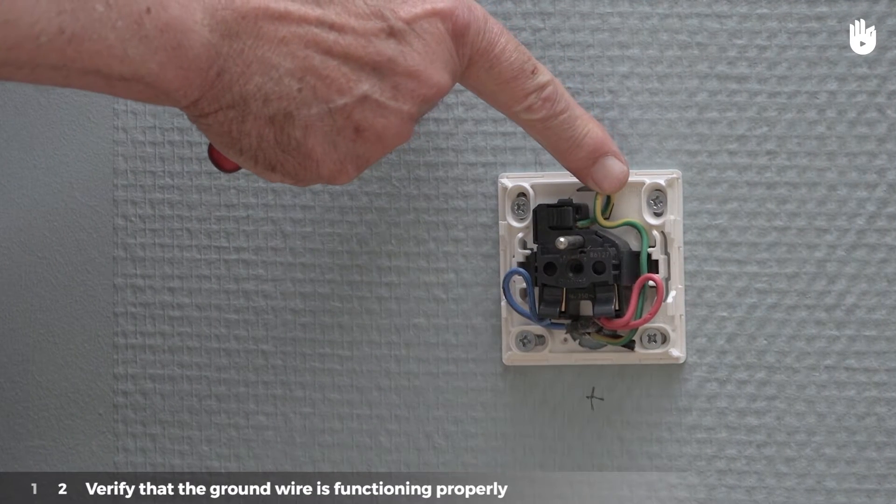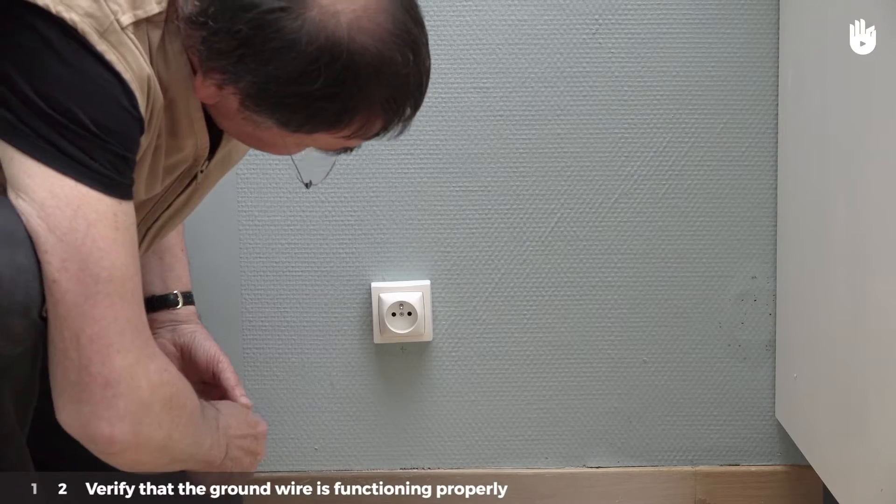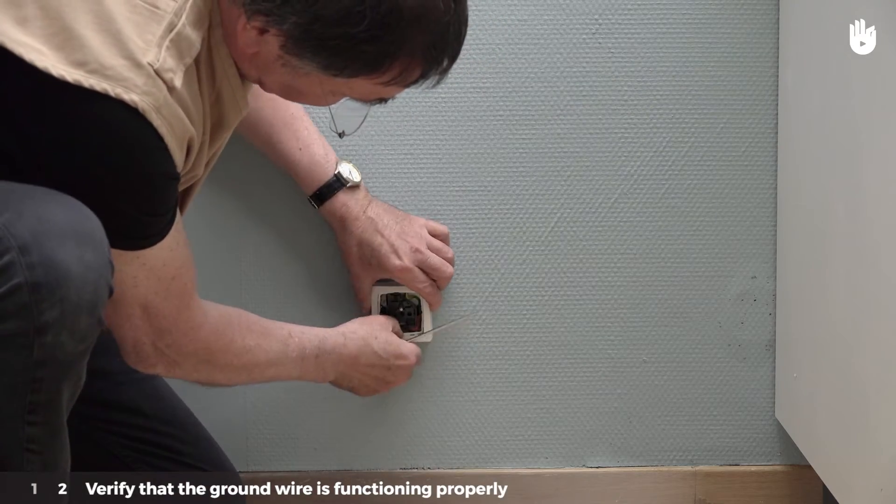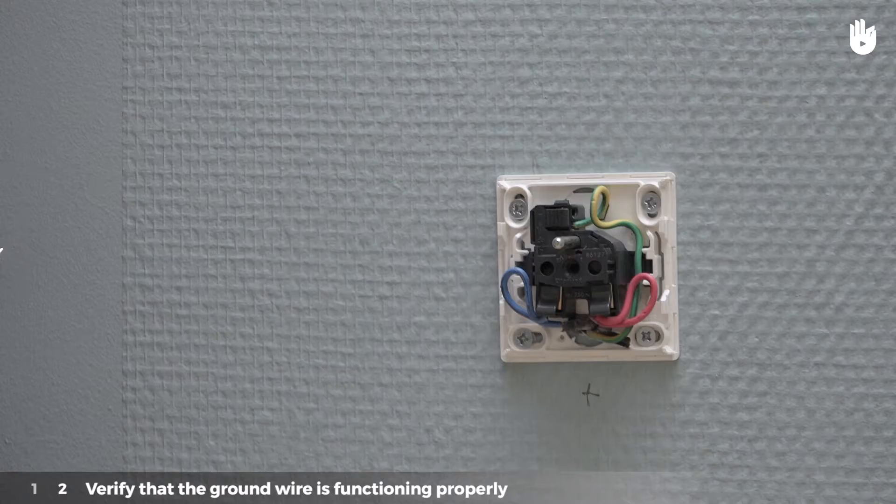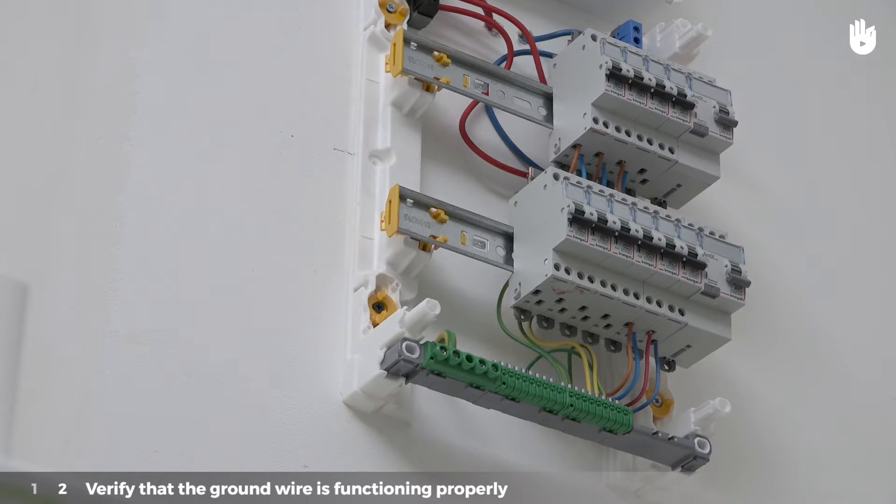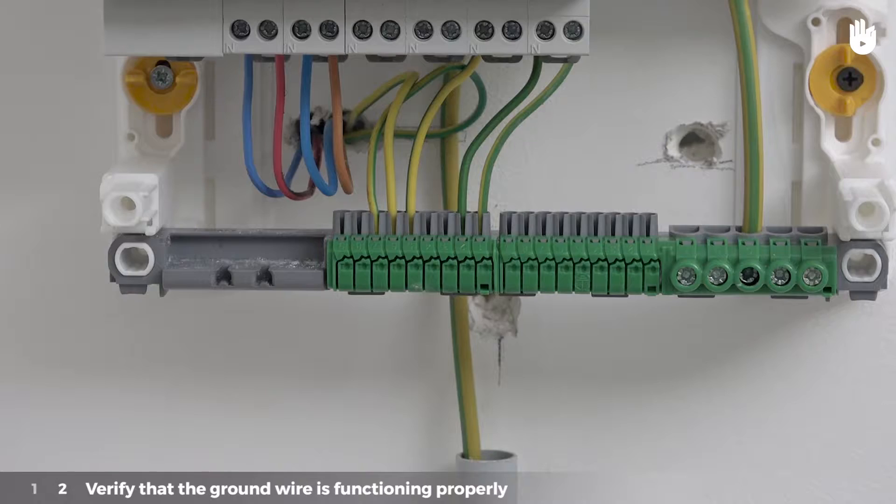Step 2: Verify that the ground wire is functioning properly. The ground wire makes it possible to dump leakage current safely. Therefore, it is important to verify that all of the outlets have a ground stud. This ground stud is connected to the grounding strip or the terminal block of the electrical panel via a green and yellow wire.